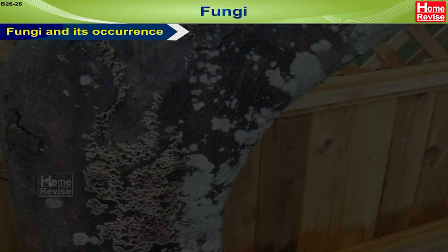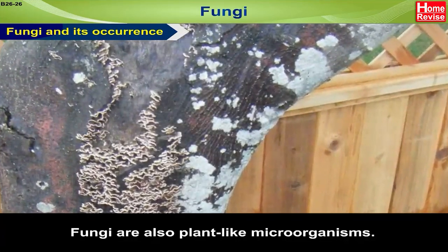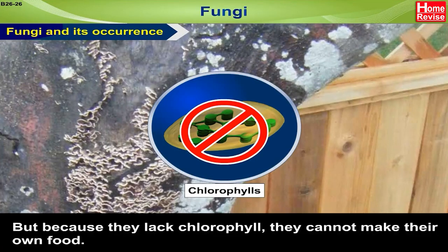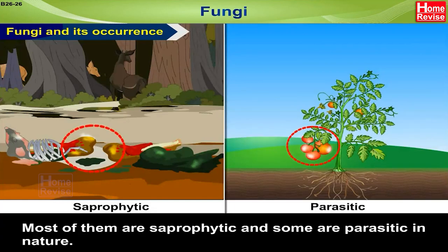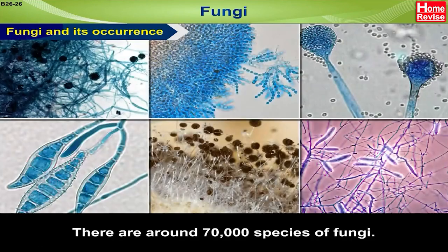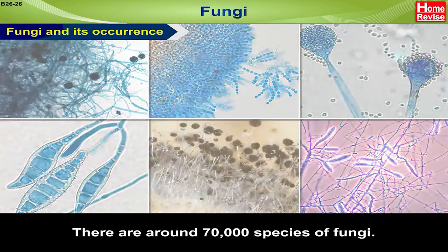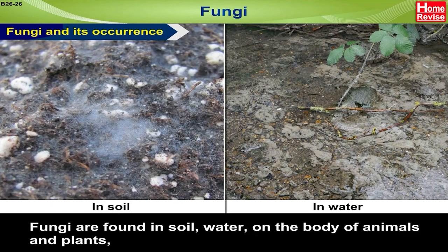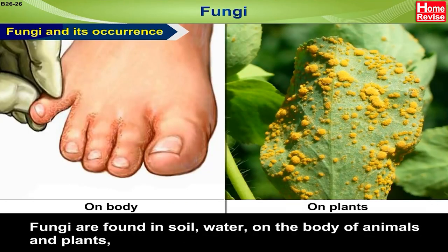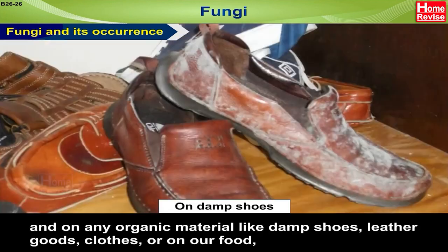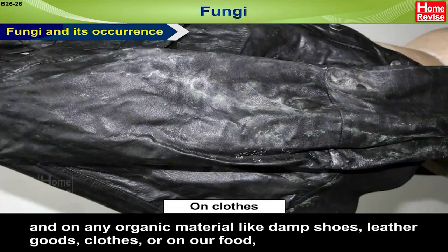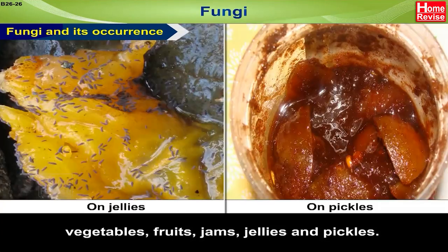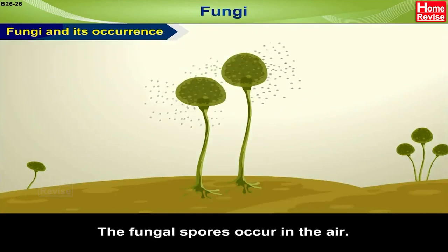Fungi are plant-like microorganisms, but because they lack chlorophyll they cannot make their own food. Most of them are saprophytic and some are parasitic in nature. There are around seventy thousand species of fungi. The study of fungi is called mycology. Fungi are found in soil, water, on the body of animals and plants, and on any organic material like damp shoes, leather goods, clothes, or on our food — vegetables, fruits, jams, jellies, and pickles. The fungal spores occur in the air.